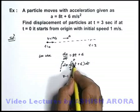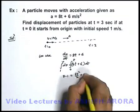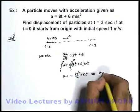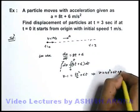That will be equal to when you integrate this it will be 8t²/2 + 6t. So here this gives us the velocity as 4t² + 6t + 1.